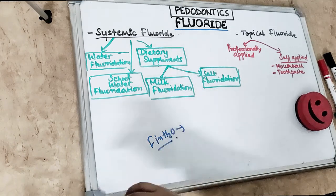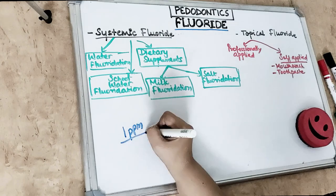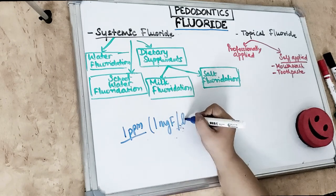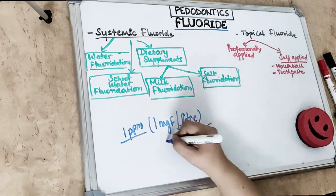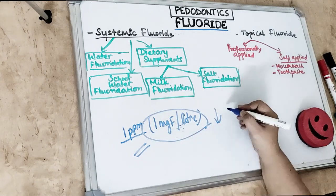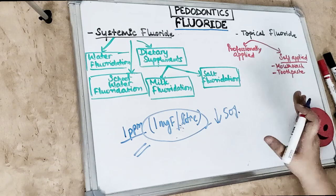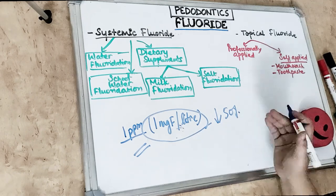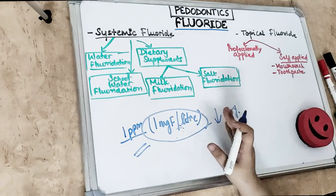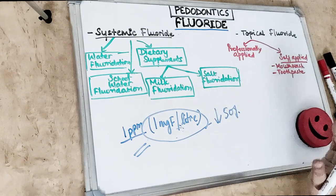Water fluoridation at a concentration of 1 ppm — that is, 1 mg of fluoride per liter of water — reduces caries by up to 50%. Many states in India already have high concentrations of fluoride, though too much also has its flaws. The advantage of water fluoridation is that no effort is required on the part of the individual, it operates at a community level, and it is low cost.